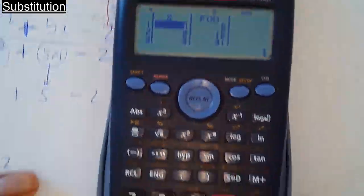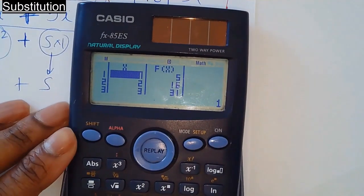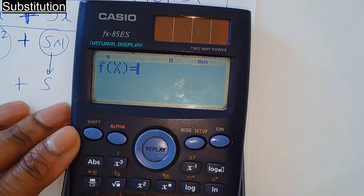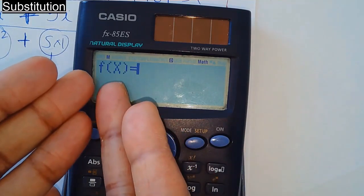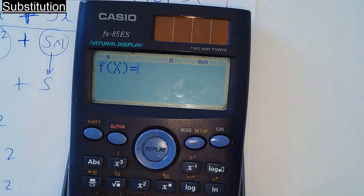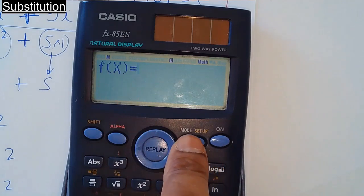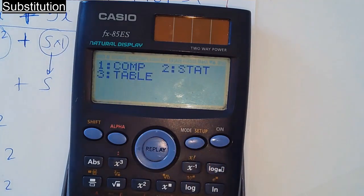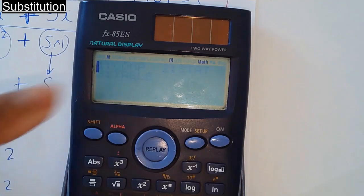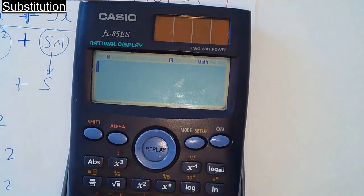To get rid of this, press the AC button. But then the problem is that still stays there, so what you can do to get rid of that: press the Mode Setup button and then press option number 1, and that takes you back to a normal calculator.